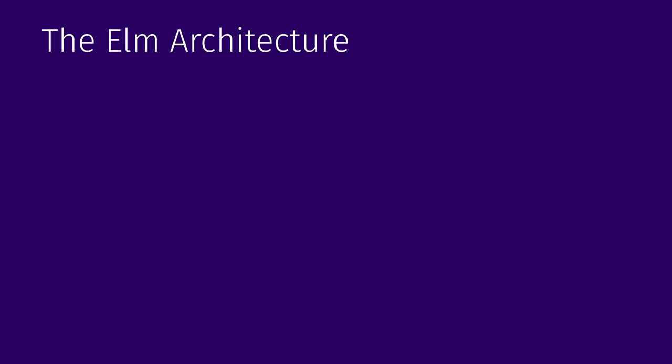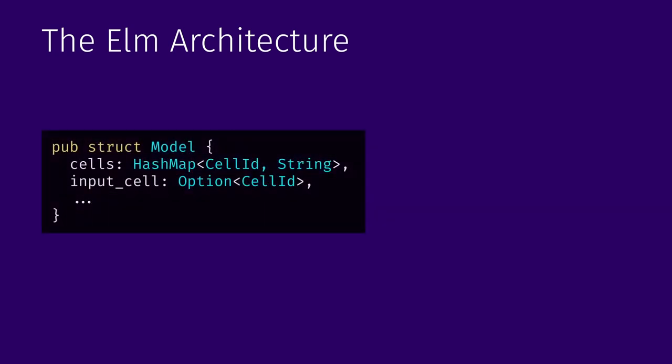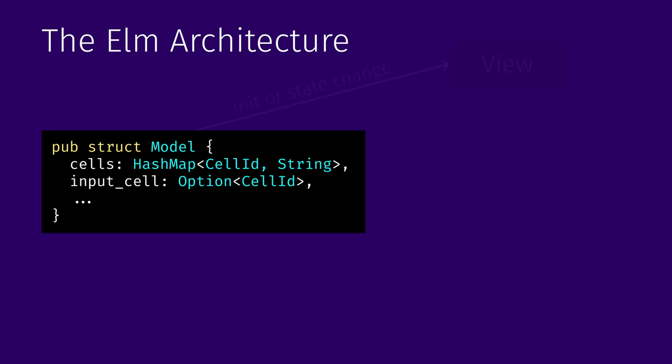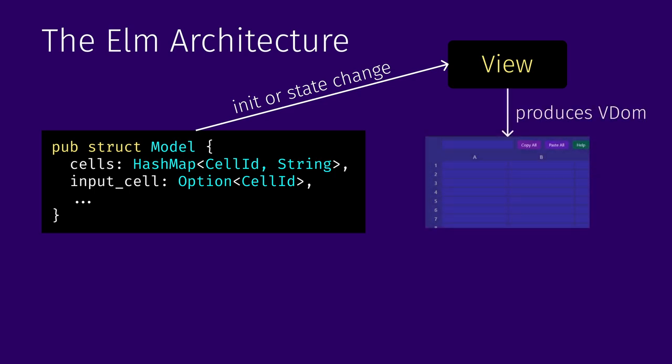What is the Elm architecture? The Elm architecture is a way to write front-end applications with an explicit state model. Essentially, your whole application state is represented as a large struct — you can store everything in this struct: user input, state of the buttons, if some modal dialog opened, or something like that. This struct is initialized and then sent to a view function. The view function takes it and produces a virtual DOM that is then compiled to produce a real DOM you can see in your browser.